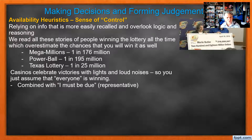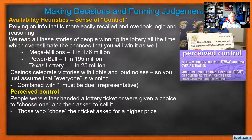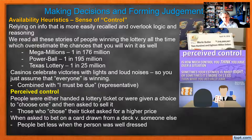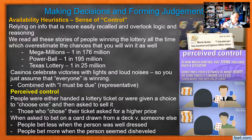This is the 'I must be due' representative heuristic, along with the availability heuristic of remembering everyone else got it. You have this perceived control. In a really interesting study, people were either handed a lottery ticket or asked to pull one from a pile. Those who chose their ticket asked for a higher price to sell it — because they think it's more special since they chose it. When asked to bet on a card drawn from a deck by someone else, people bet less when the person who drew it was well-dressed, and more when the person seemed disheveled. It's the same randomness, but we try to make sense of random things in life.